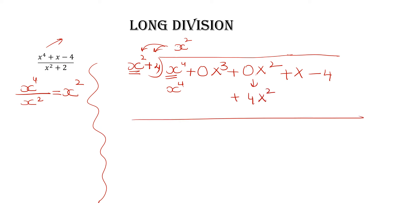Change the sign: plus changes into minus, plus changes into minus. x⁴ and -x⁴ cancel. The 0x³ term — anything multiplied by 0 is 0, so we don't write it. For x²: 0x² minus 4x² gives you -4x². Write down the remaining terms: +x and -4.